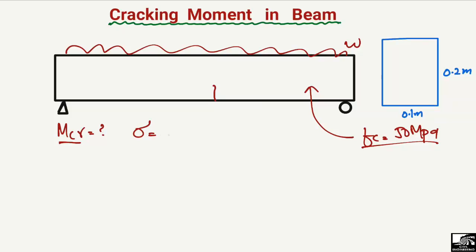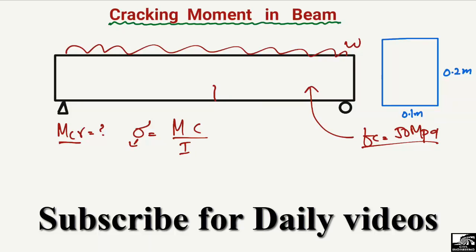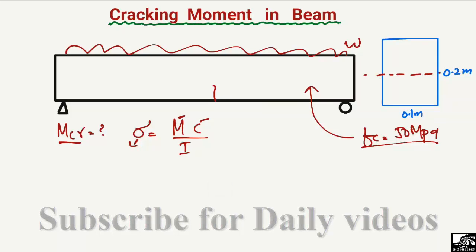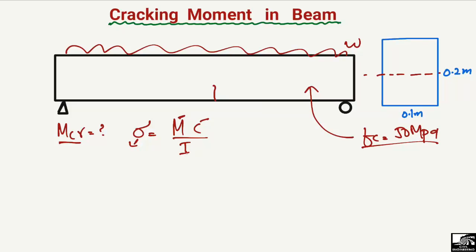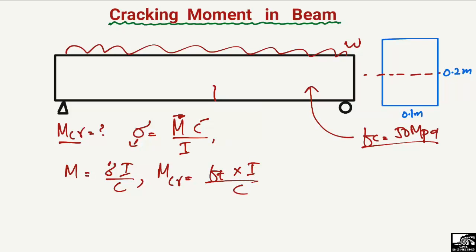To find the cracking moment, we use the bending stress formula: σ = MC/I, where σ is the bending stress, M is the moment, C is the distance from the neutral axis to the point of interest, and I is the moment of inertia of the cross-section. Rearranging for M gives: M = σI/C. If we replace σ with the tensile strength of the concrete, then M becomes the cracking moment: M_cr = f_t × I / C.